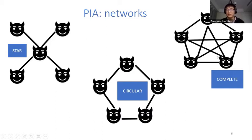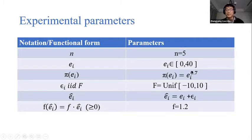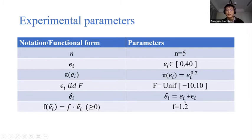We also consider a complete network where the randomly checked player can challenge anyone else in the group, resembling a cartel where firms know each other well. We choose a simple set of parameters: five players per group, crime level ranging from zero to 40, and a benefit function of the form eᵢ^0.7, which is increasing and concave. The observation error follows a uniform distribution with support between −10 and +10, so the observed crime level is the true level plus noise. The fine is linear in the observed crime level.